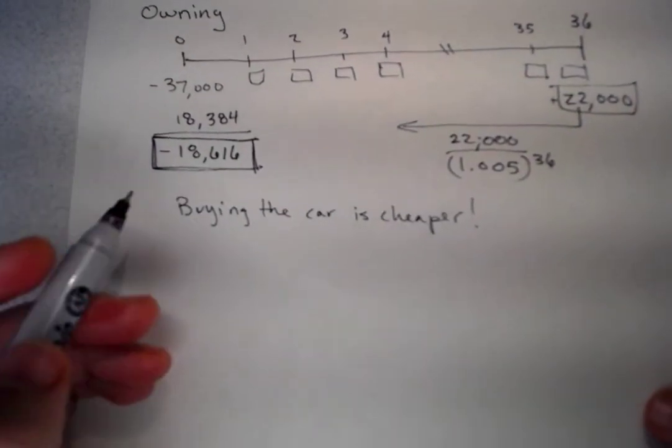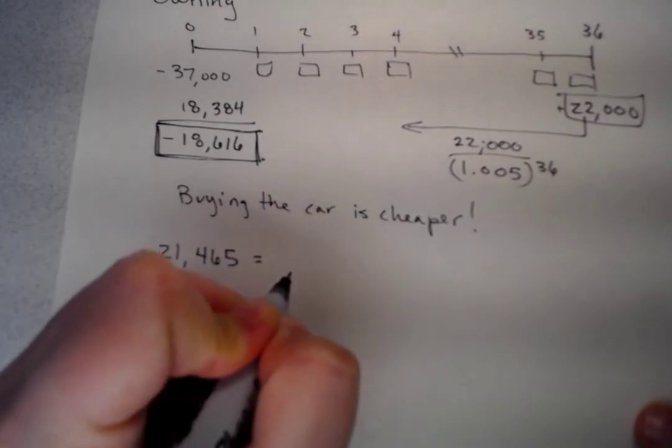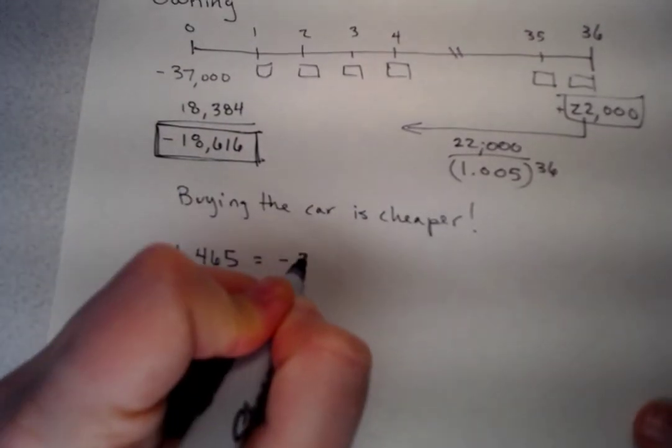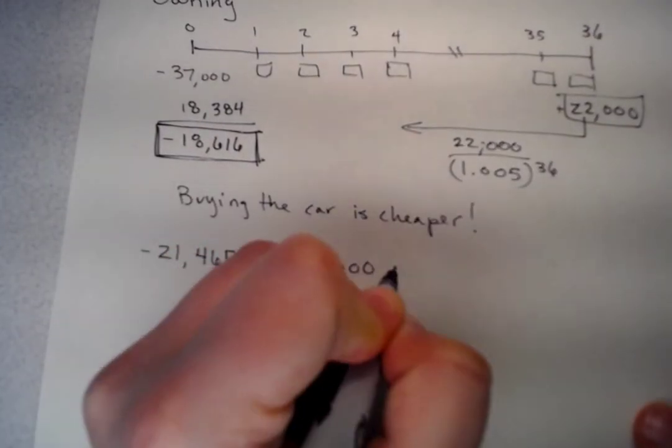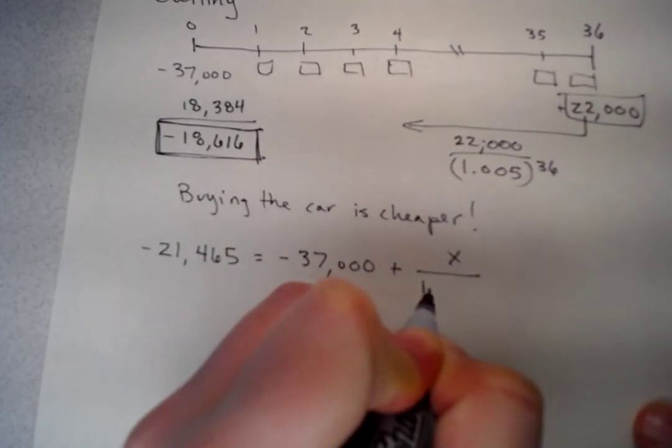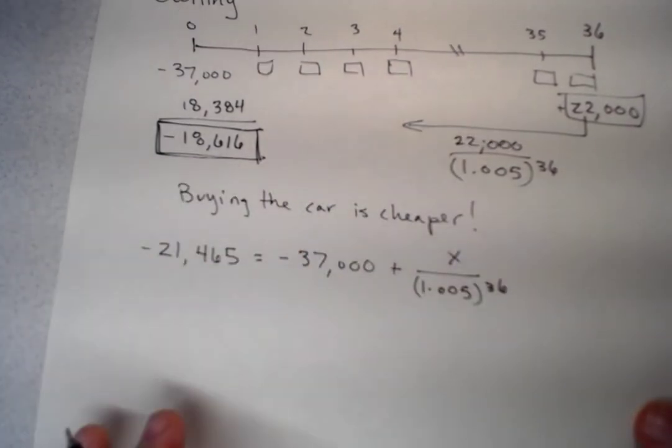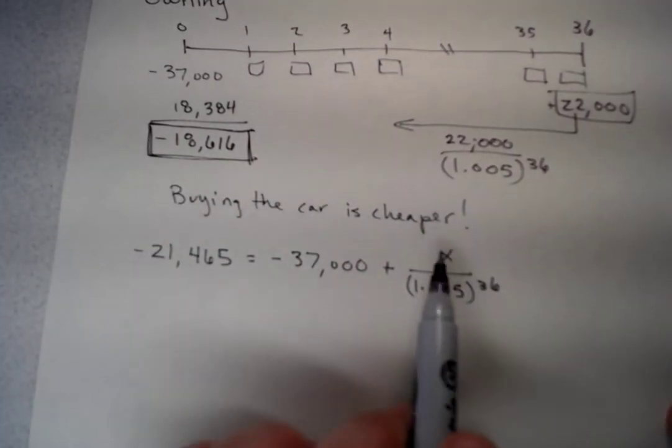To do that, we have a relatively simple equation, which is minus $21,465 equals minus $37,000 plus X divided by 1.005 to the 36. So what we're solving for is X.